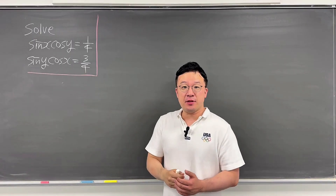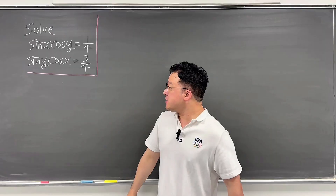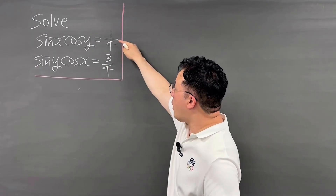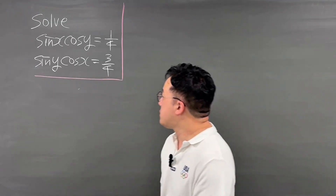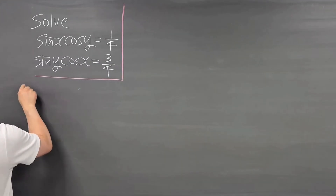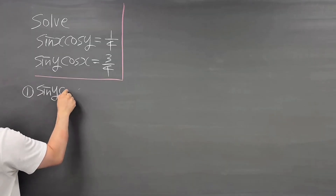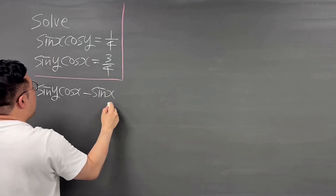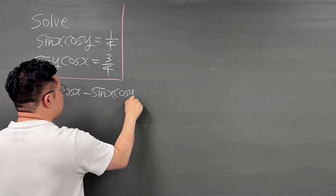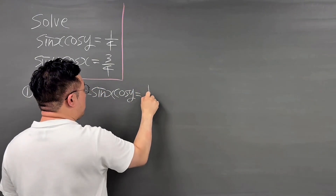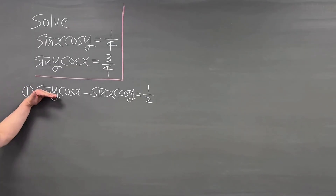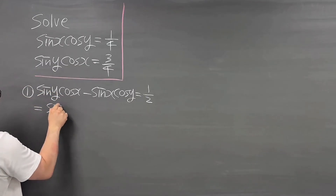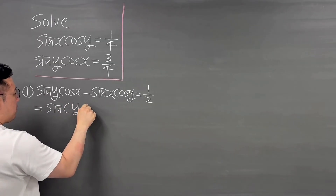The main idea for this question is to use the sum and difference formula. First, let's use the difference formula — subtracting equation 1 from equation 2. So we get sine y cosine x minus sine x cosine y equals 2 over 4, that is 1 over 2. This is the difference formula, so the left-hand side is the same as sine of (y minus x).